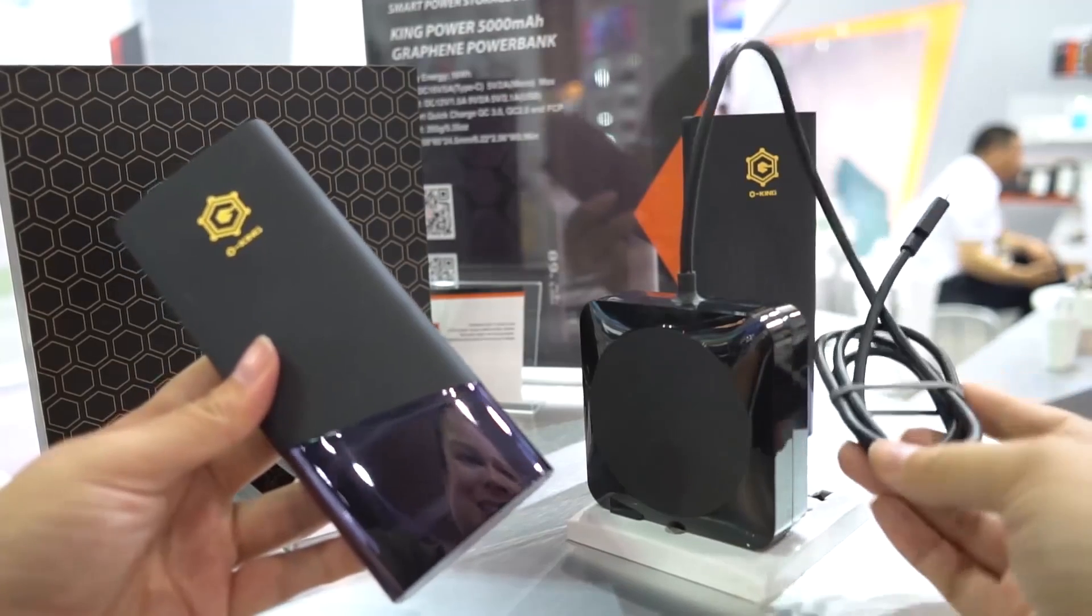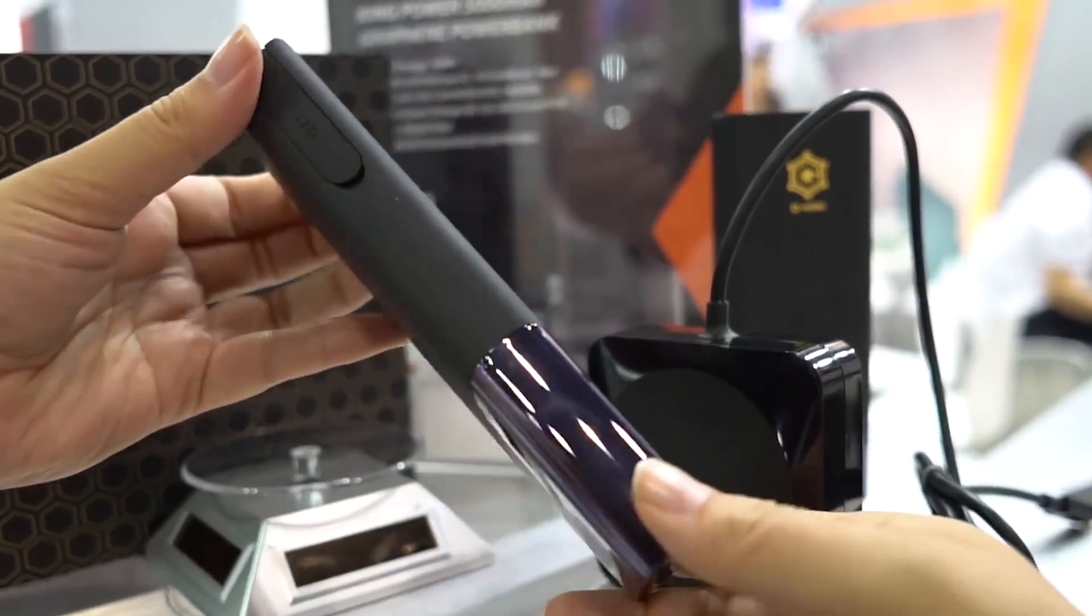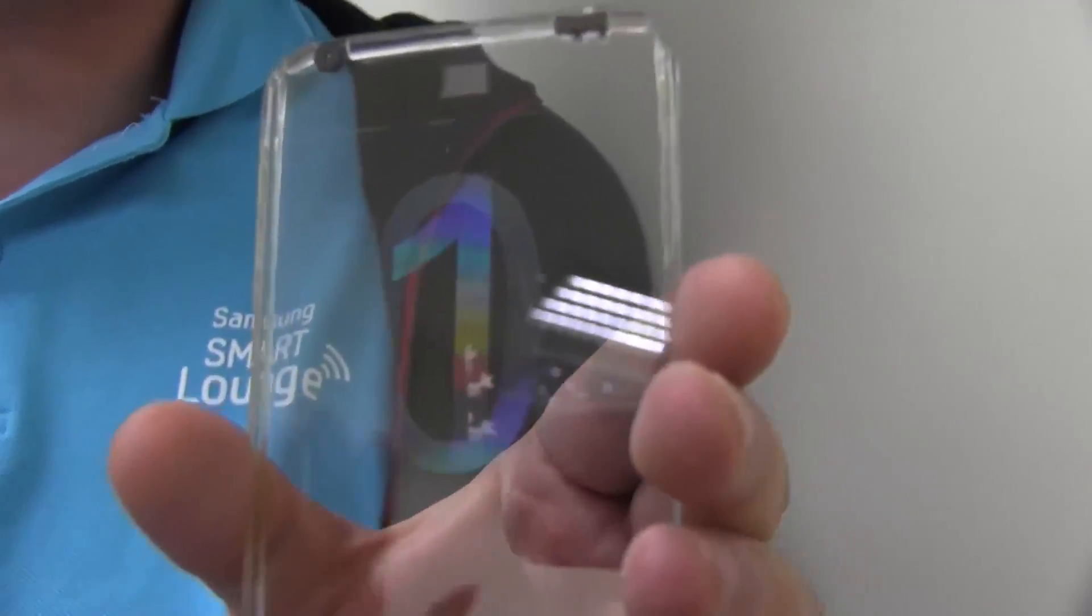We've actually tested out a graphene battery pack. It went from zero to 5,000 milliampere in only 12.5 minutes. Graphene also has the ability to be transparent so we could see a truly transparent smartphone in the future.